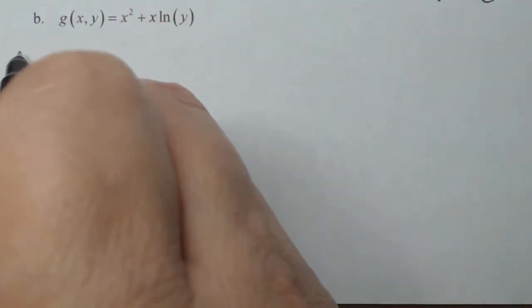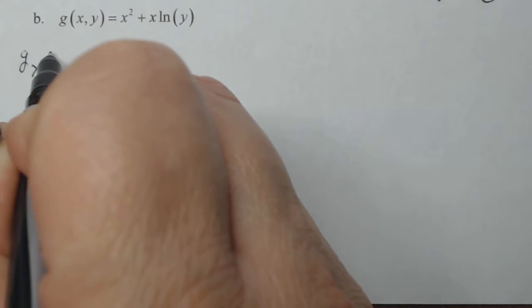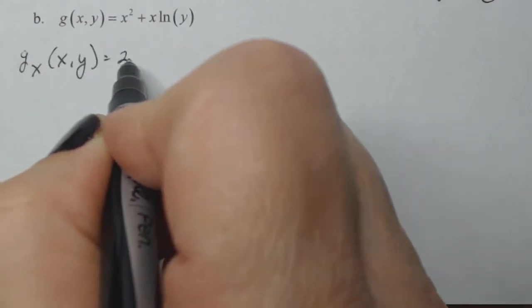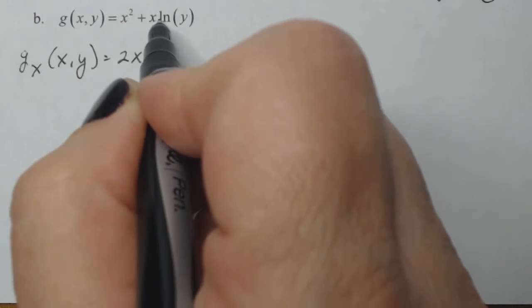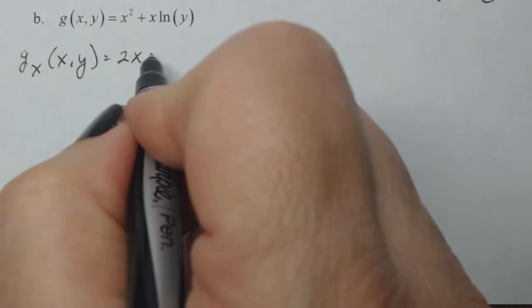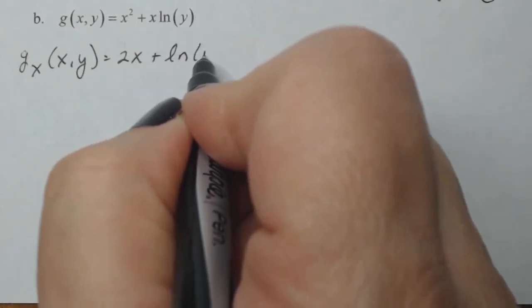So let's start with g sub x. So it's going to be 2x. This natural log of y is going to be a constant if I'm taking it with respect to x, so that's just going to be plus natural log of y.